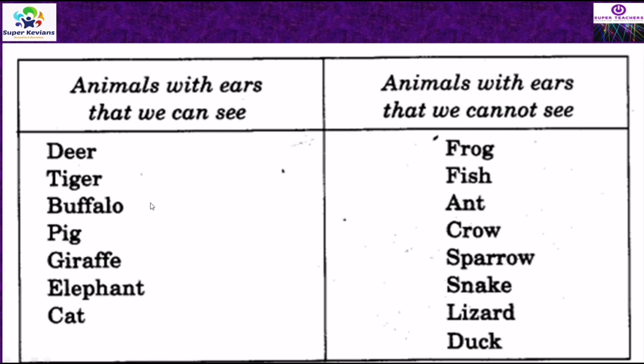Animals whose ears we cannot see are: frog, ant, crow, sparrow, snake, lizard, and dog. So let's go to the next one.